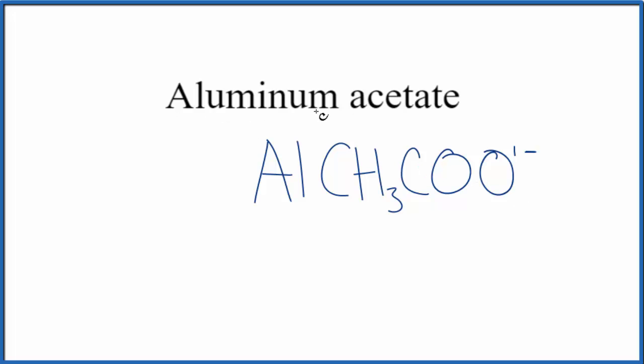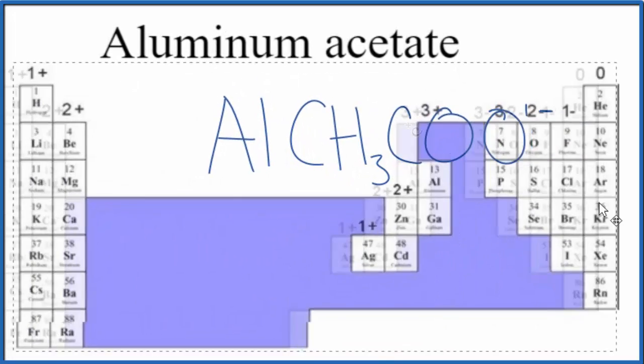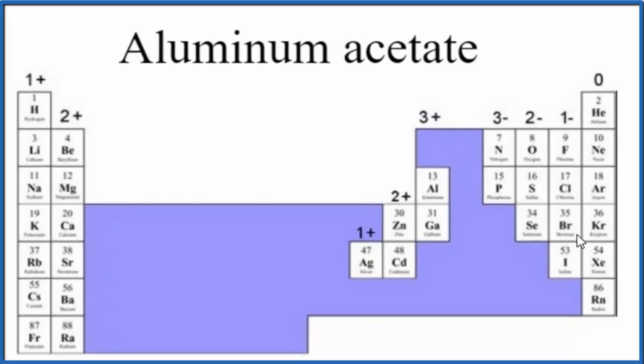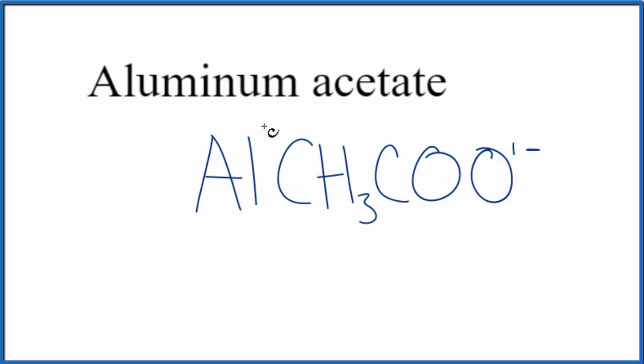So since we have a metal in this group of nonmetals here, this is going to be an ionic compound. We have to balance the charge. If we look up aluminum on the periodic table, we can see that aluminum right here has a 3-plus ionic charge. So we know the ionic charge for aluminum. So let's write 3-plus in there.